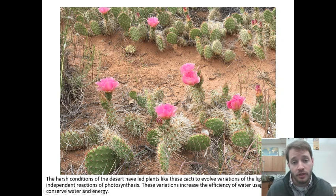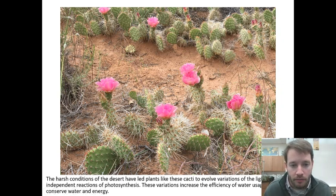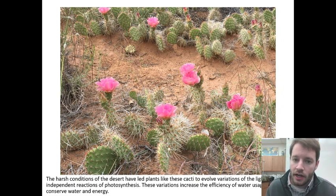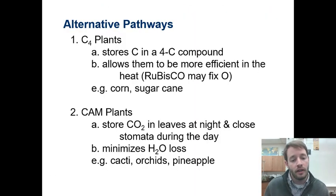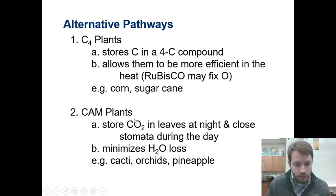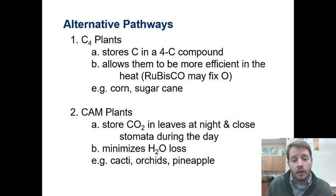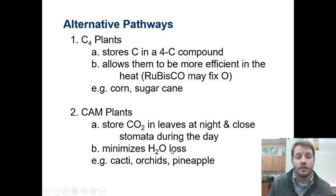There are other alternative pathways for photosynthesis. For example, these cacti exist in very arid environments where the air is very dry. They don't want to have their stomata open during the daytime because the water will leave. So they have an alternative pathway — these are what we call CAM plants. CAM plants store their CO2 in their leaves at night, close their stomata during the day, and undergo photosynthesis with the stored CO2. This minimizes water loss. Some examples of CAM plants are cacti, orchids, and pineapple plants.